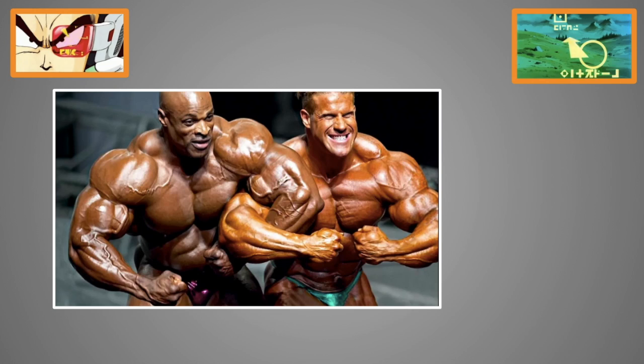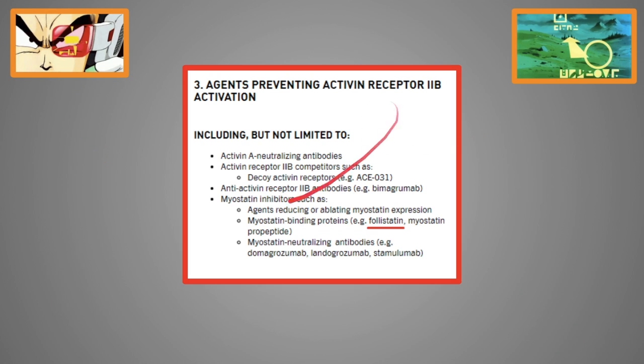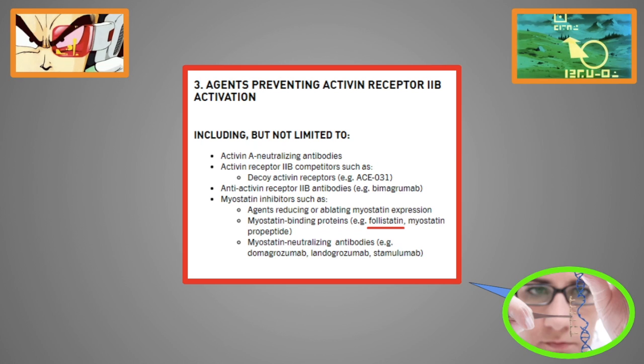And as mentioned several times, myostatin is also the reason why IFBB bodybuilders have this cartoonish physique. One of the effects of anabolic steroids is to upregulate the follistatin pathway and downregulate the myostatin pathway. That's also why every unnatural myostatin inhibitor is currently banned by the World Anti-Doping Agency, especially since athletes have recently been looking into gene doping.